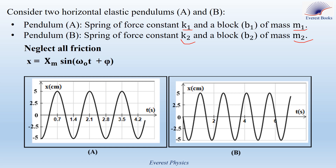Given the time equation for simple harmonic motion: x equals xm sin(omega_0 t + phi), where xm is the amplitude of the oscillation, omega_0 is the angular frequency, and phi is the initial phase angle. The left graph represents the abscissa of the center of mass of B1 as a function of time, while the second graph represents the abscissa of the center of mass of B2 as a function of time.